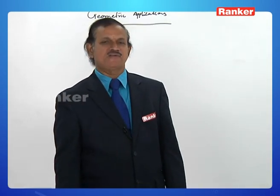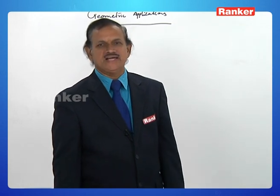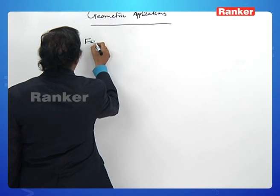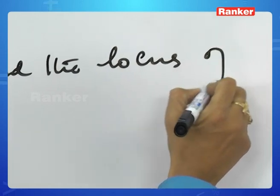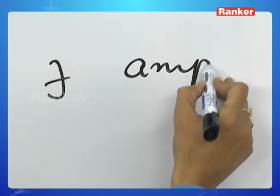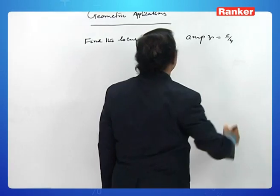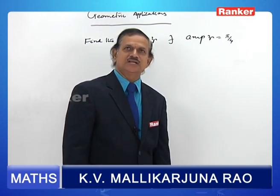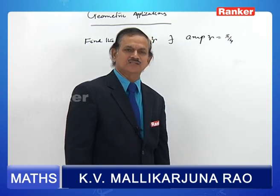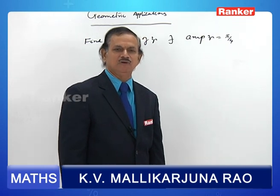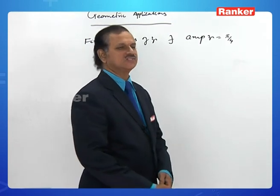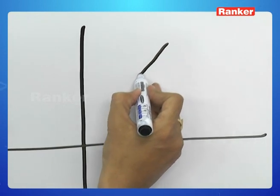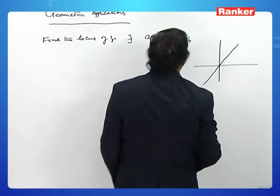Let us now observe some different non-standard loci. Amplitude of z is equal to π/4. Let z = x + iy. The amplitude of z is tan⁻¹(y/x), so tan⁻¹(y/x) = π/4, meaning y/x = tan(π/4) = 1, hence x = y. The locus is the line passing through the origin and bisecting the first and third quadrants.